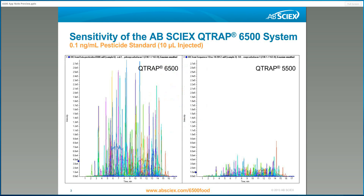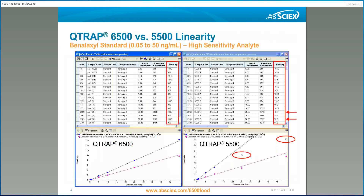Here's just one example where high sensitivity was used to monitor pesticides at low levels. On the left side, you can see data from the 6500 system. On the right side, you can see data from the 5500 system. On average, we could see a five times gain in sensitivity comparing these two methods.